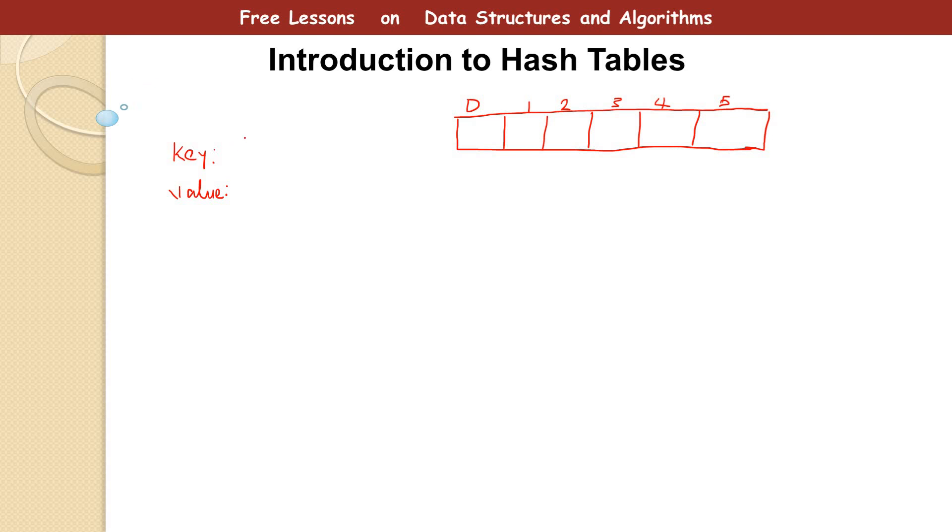So we have key and we have a value. The key is the data you want to store, let's say my name. And then the value, let's say the phone number. What a hash table does is you need to use something called a hash function that accepts this key and gives you a value of position where to store this data.